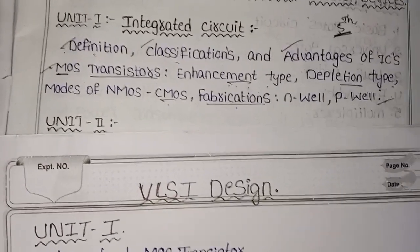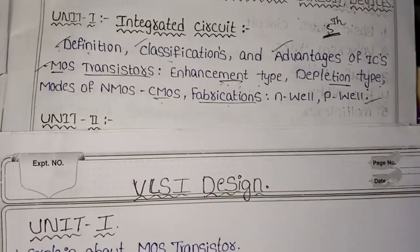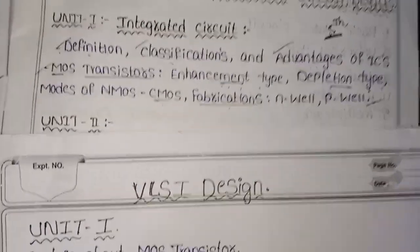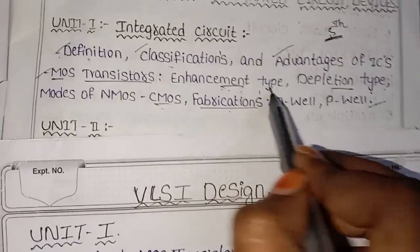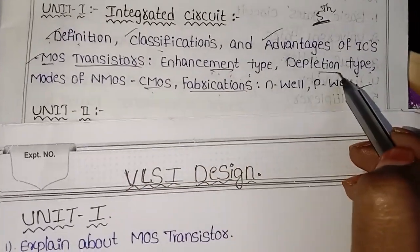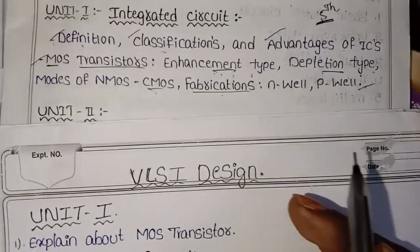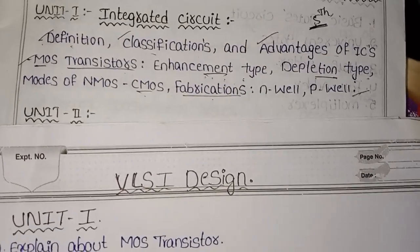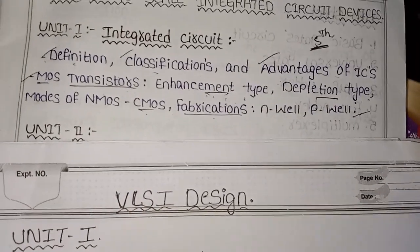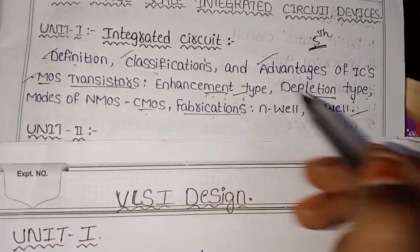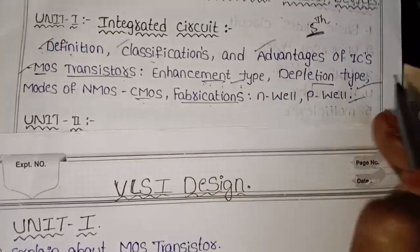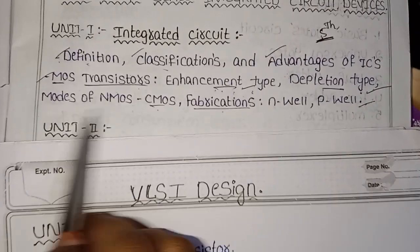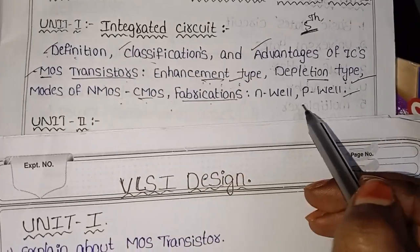For the two types, the explanation is the same. Cover the Enhancement Type and Depletion Type. The rare chance question is to explain about the MOS Transistor. With high chances, NMOS is called CMOS Fabrication and N-well/P-well.